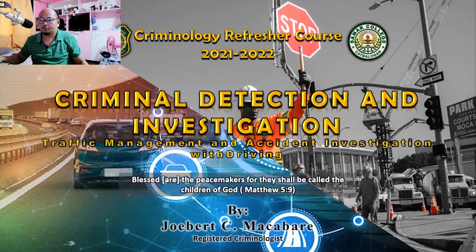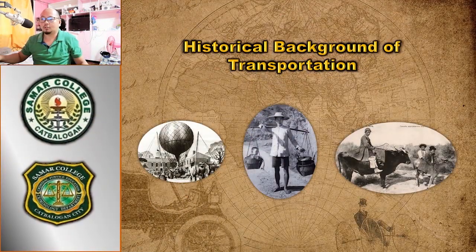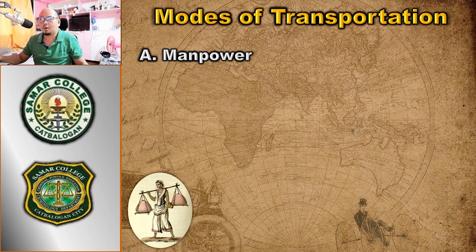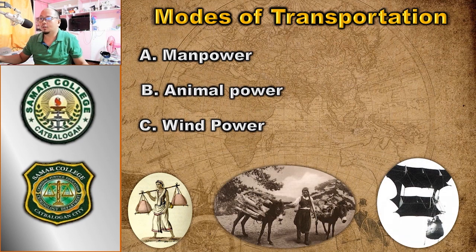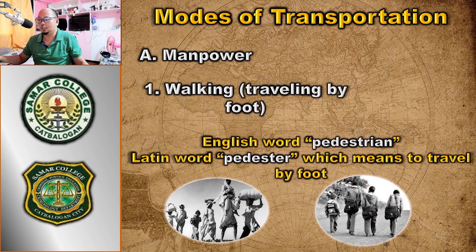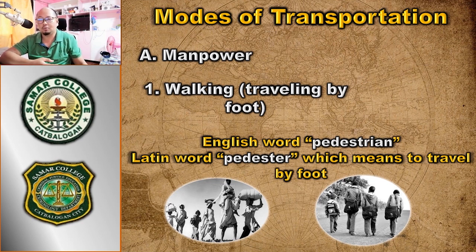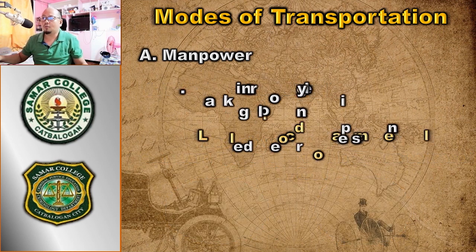First, we are going to discuss the historical background of transportation. We have three modes of transportation: manpower, animal power, and wind power. Under manpower, we have walking or traveling by foot — in English, 'pedestrian,' from the Latin word meaning to travel by foot. Early man, who had no domesticated animals capable of carrying goods from one place to another, traveled by walking.